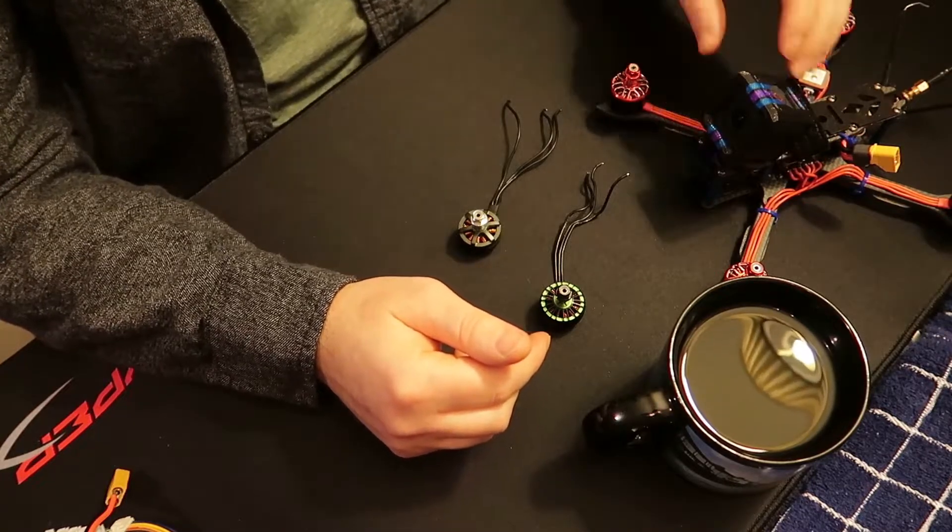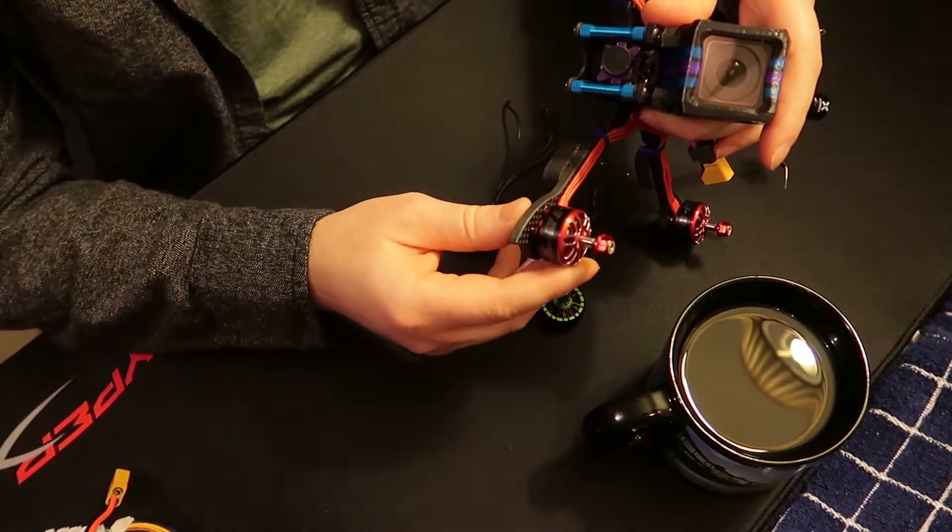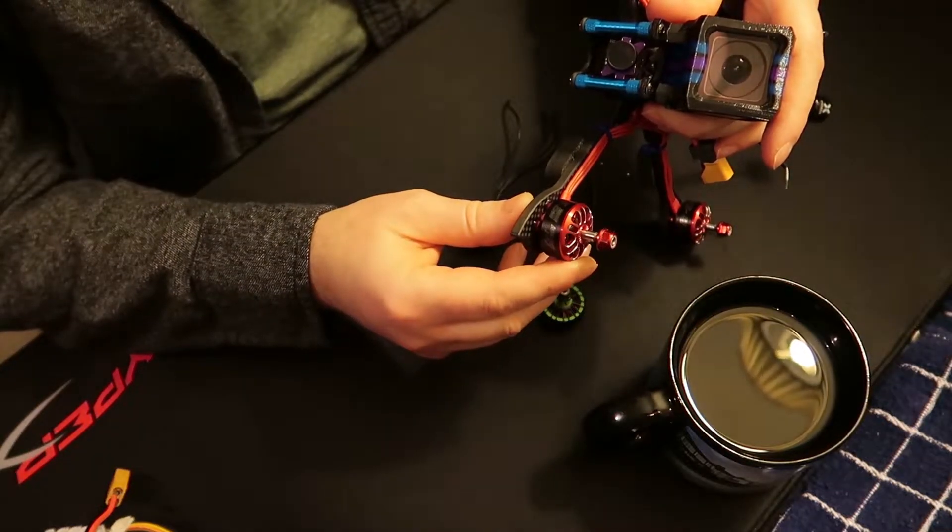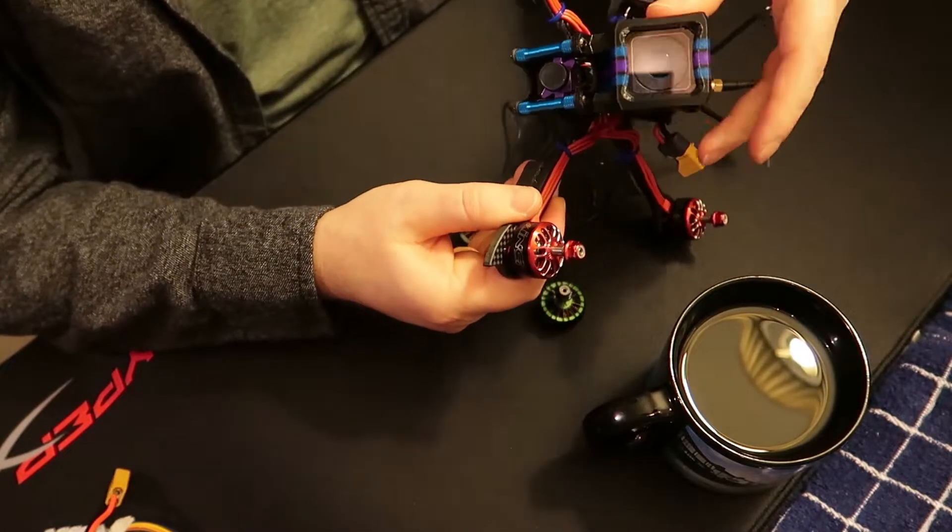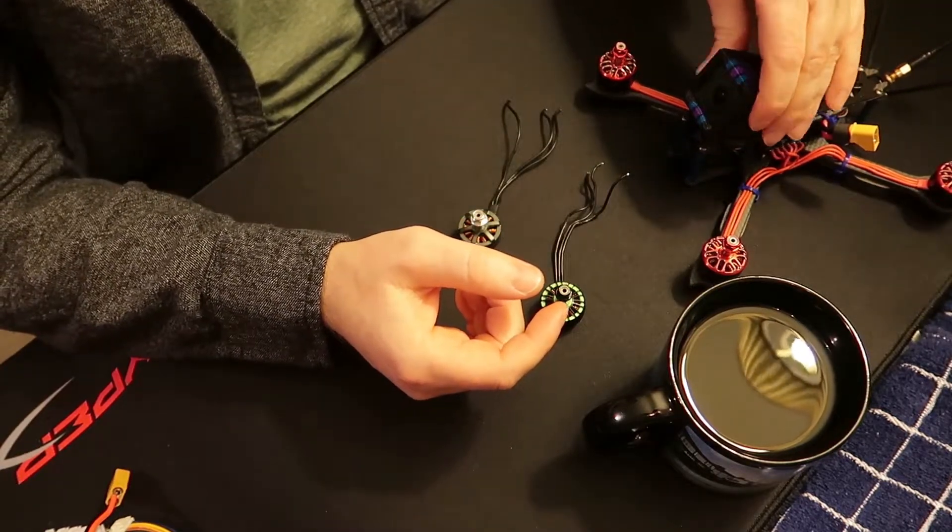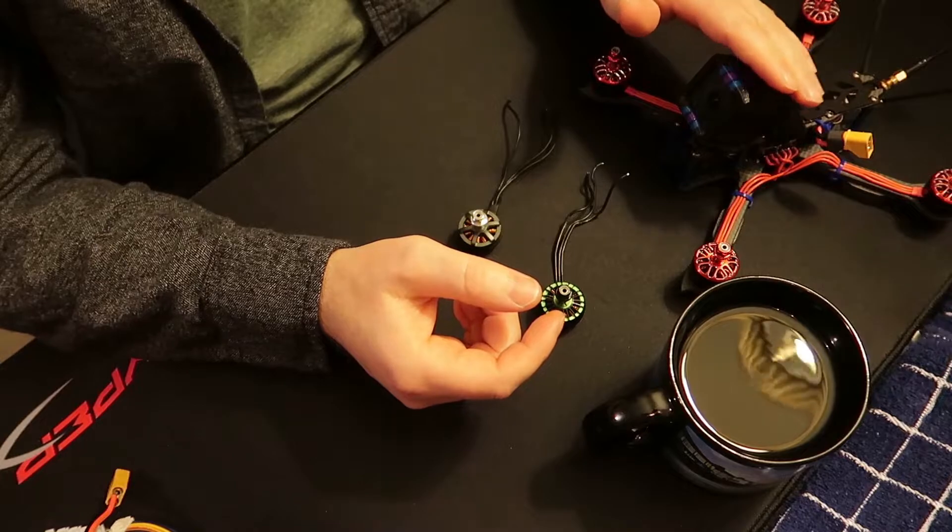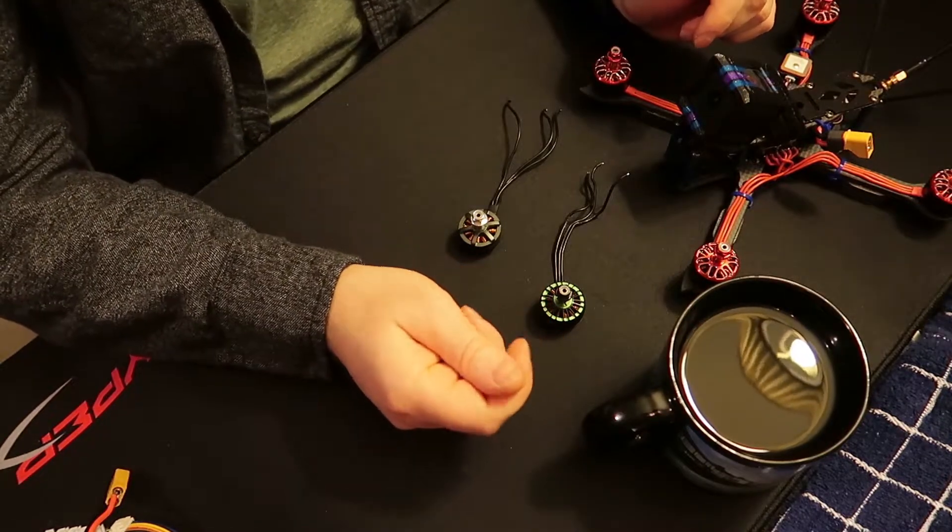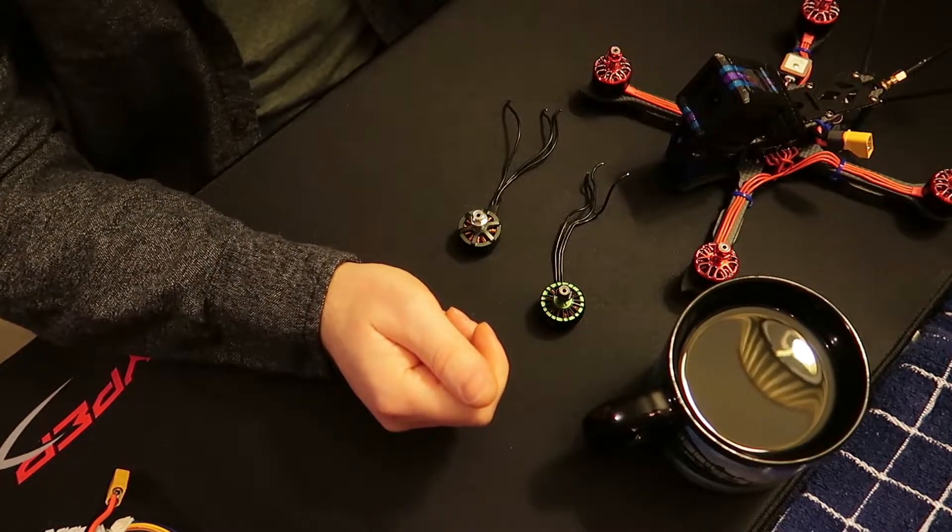This one that I have set up, the 2208 1800 KV, you'll see in the video that for 6", this thing is packing quite a punch as far as the power compartment goes.